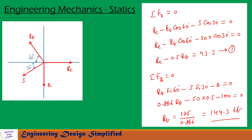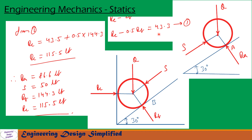Similarly, applying sigma FY = 0, the sum of forces along the Y direction equals zero. Along the Y direction we have RB sin 60, minus S sin 30 acting downwards, minus Q acting downwards. RC has no vertical component since it is horizontal. After substituting values and simplifying, we get 0.866 RB minus 50 × 0.5 minus 100 equals zero, where S equals 50 lb as calculated previously. So RB equals 125 / 0.866, which equals 144.3 lb. From Equation 1, RC minus 0.5 RB equals 43.3, and substituting RB we get RC equals 115.5 lb.